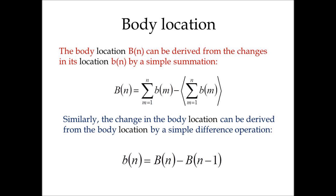So evidently, the body location is the summation over the change in body location. The capital B, which is the specific body location — the exact position of the body — is actually a summation over these changes. Now, in order that the average location of the body should be zero, we will subtract from this value its average; this is the reason for the triangular brackets there. But it is only a constant, actually. Similarly, we can calculate the change in body location from the body location itself by a simple difference operation. This is trivial in signal processing methods.